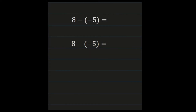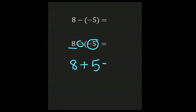For the next example, we have eight minus a negative five. We're going to run through the subtraction steps. Our positive eight, that first number, stays exactly how it is — a positive eight. The subtraction sign we're changing to addition. Then our negative five, we are changing the sign, so negative five becomes a positive five. And here we have eight plus five, which looks like something you've been doing, so you're just going to add it. Eight plus five is thirteen. So eight minus a negative five is positive thirteen.